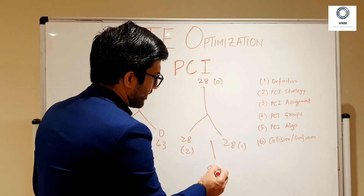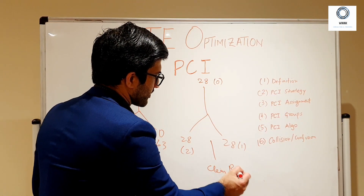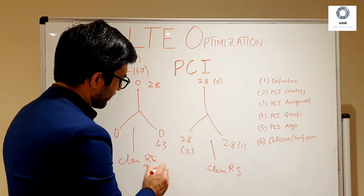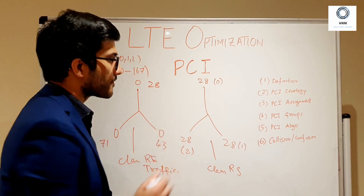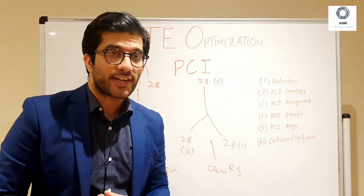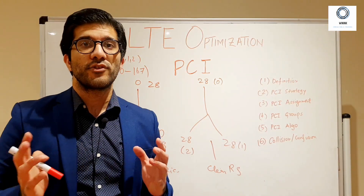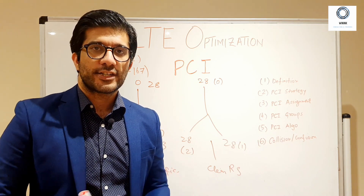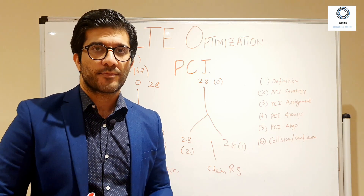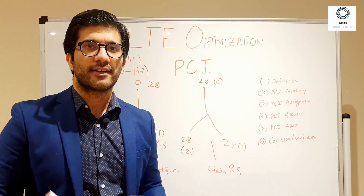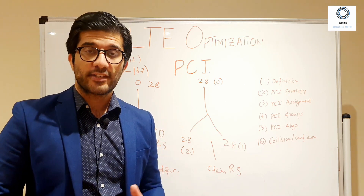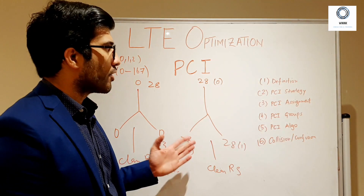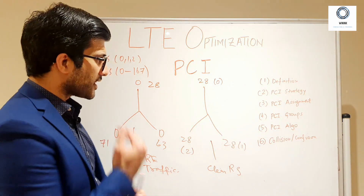The recommended strategy is the first one — same PSS with different SSS — because this gives you clean reference signals. If you have PCI interference on your reference signal, your channel estimation, channel reporting, and access procedures will be seriously hampered, since the reference signal is used to estimate the channel and make handover decisions. Therefore, the first strategy is preferred.